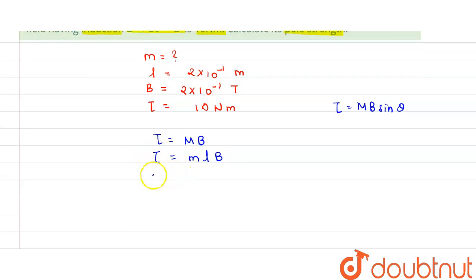This is equal to τ. So we can write m = τ/(L × B). Here τ is 10 newton meter, L is 2 × 10⁻¹, and B is 2 × 10⁻¹.